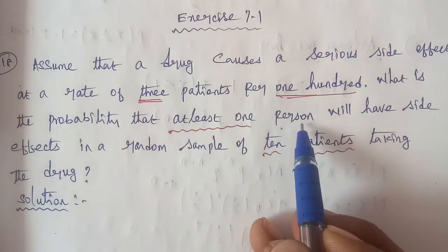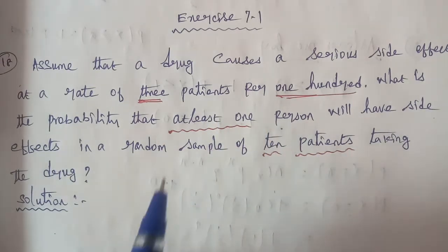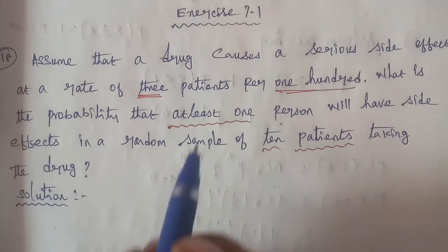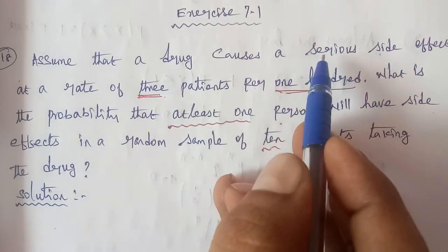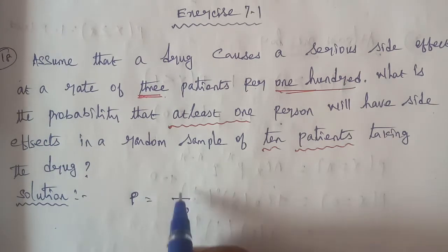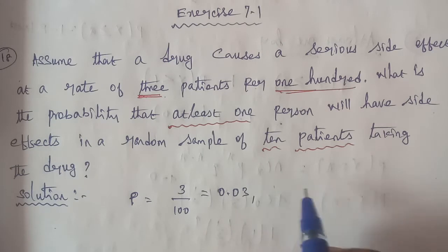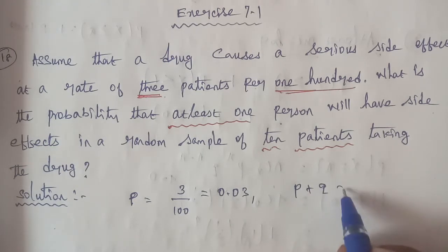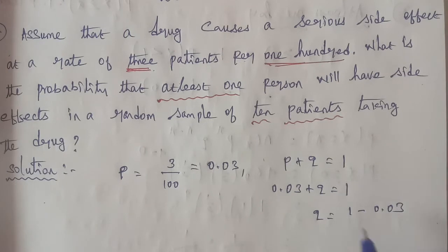We need to find the probability of at least 1 side effect in a sample of 10. The rate of side effects is 3 per 100, so P is equal to 3 by 100, which gives us 0.03. Using the formula P plus Q equals 1, therefore Q is equal to 1 minus 0.03, so Q equals 0.97.